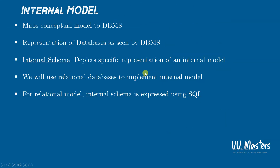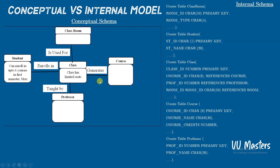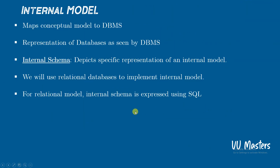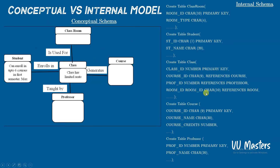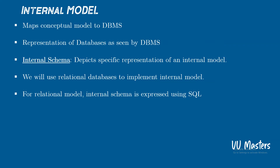The internal model takes the conceptual model or requirements and constraints and translates them. For example, a classroom table is converted into a CREATE TABLE classroom in SQL; a student entity is converted into a student table; a class into a class table, and so on for all requirements including course and professor. The internal schema depicts a specific representation of an internal model. As you can see, this is a representation in code or SQL query — we can call it the internal schema or internal model representation.